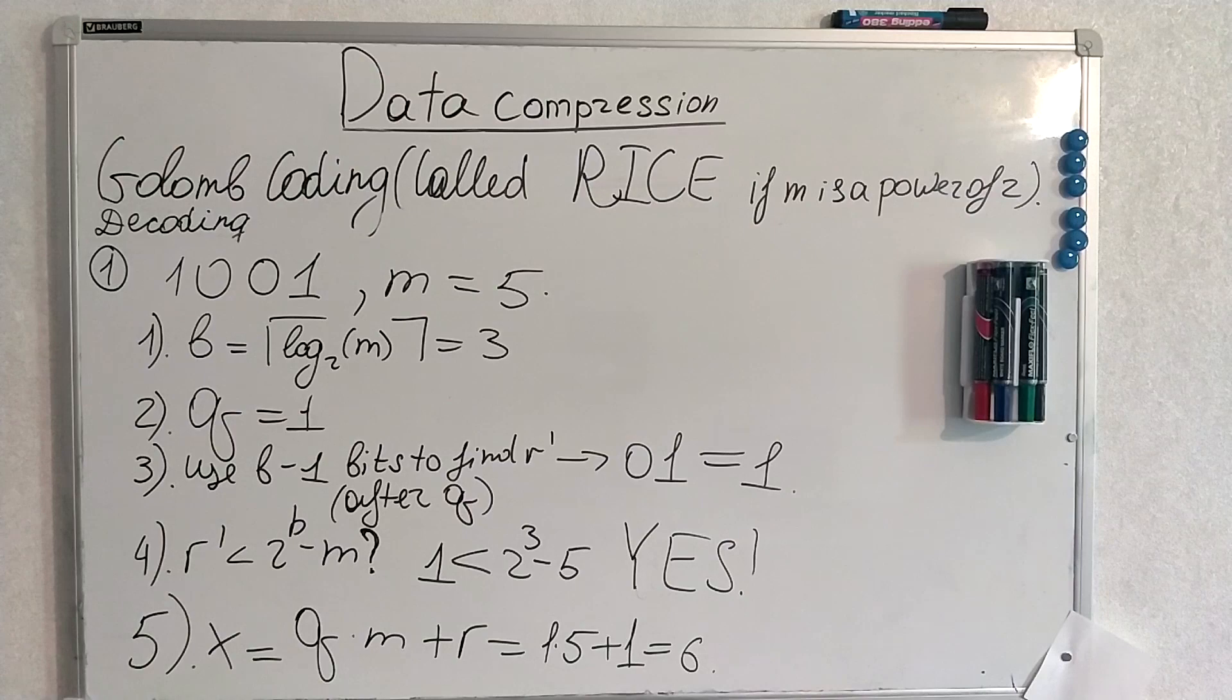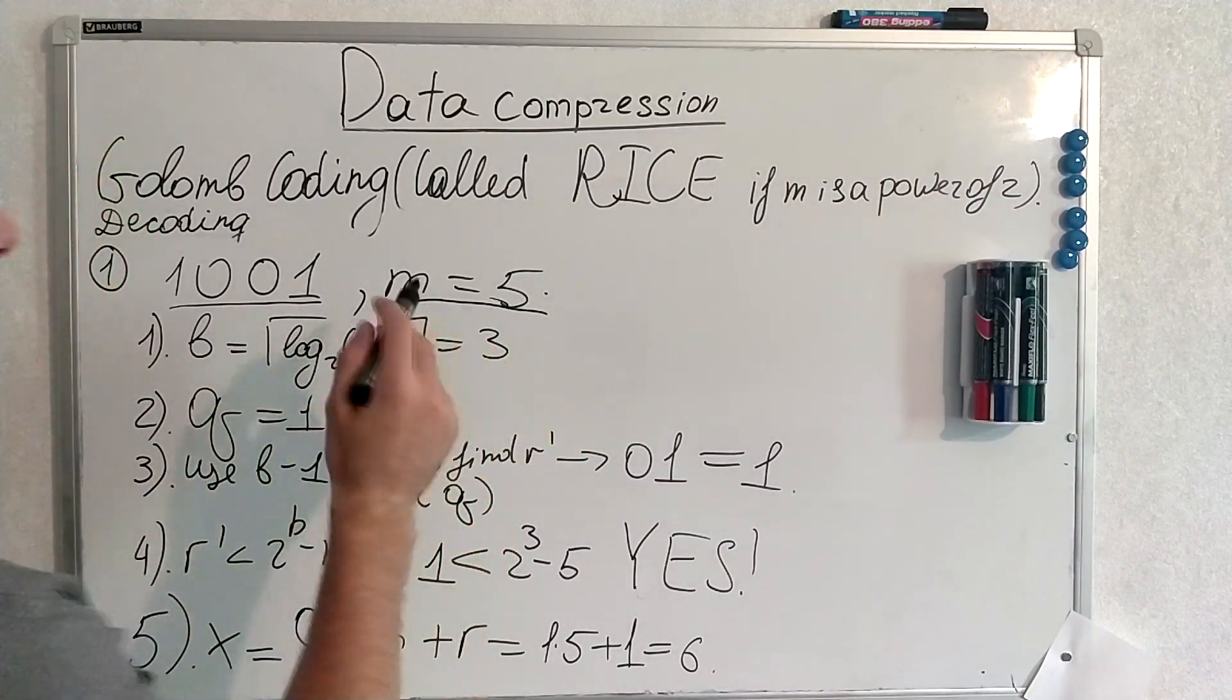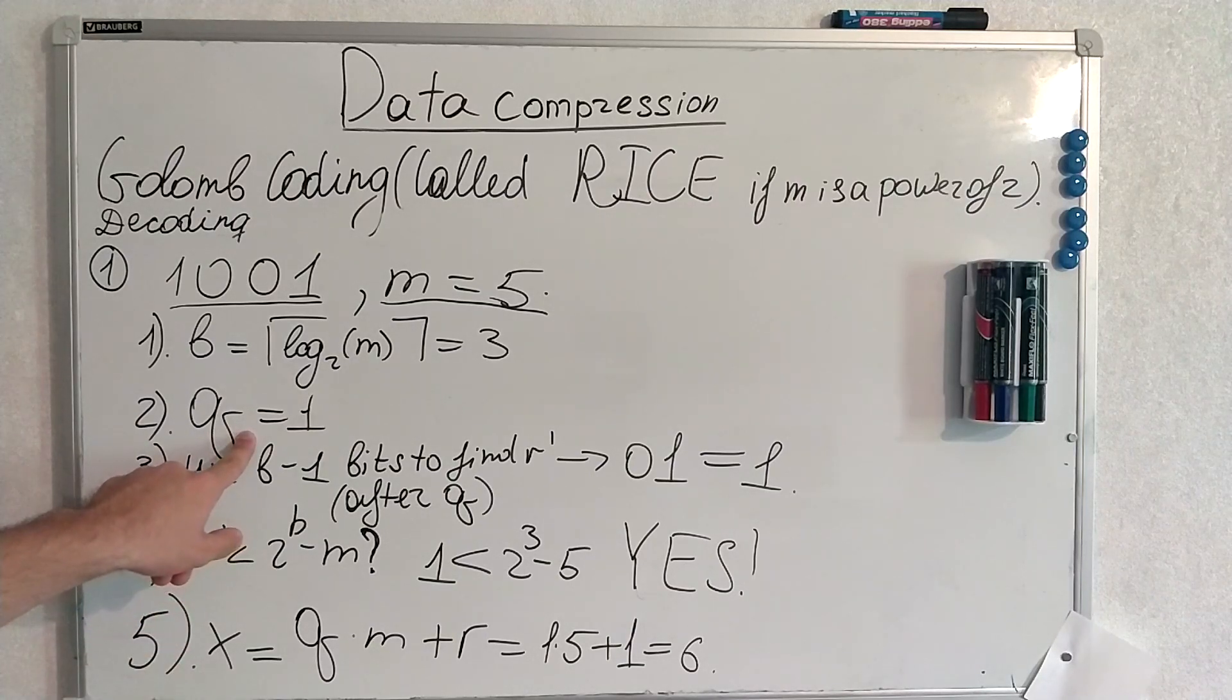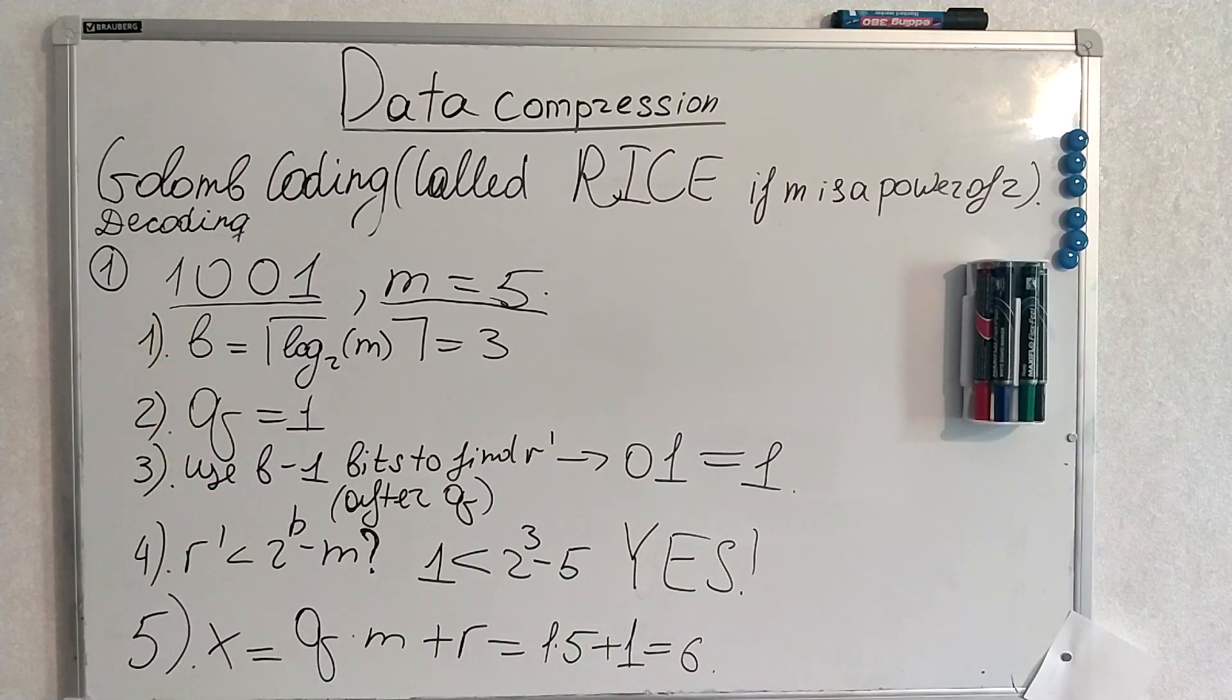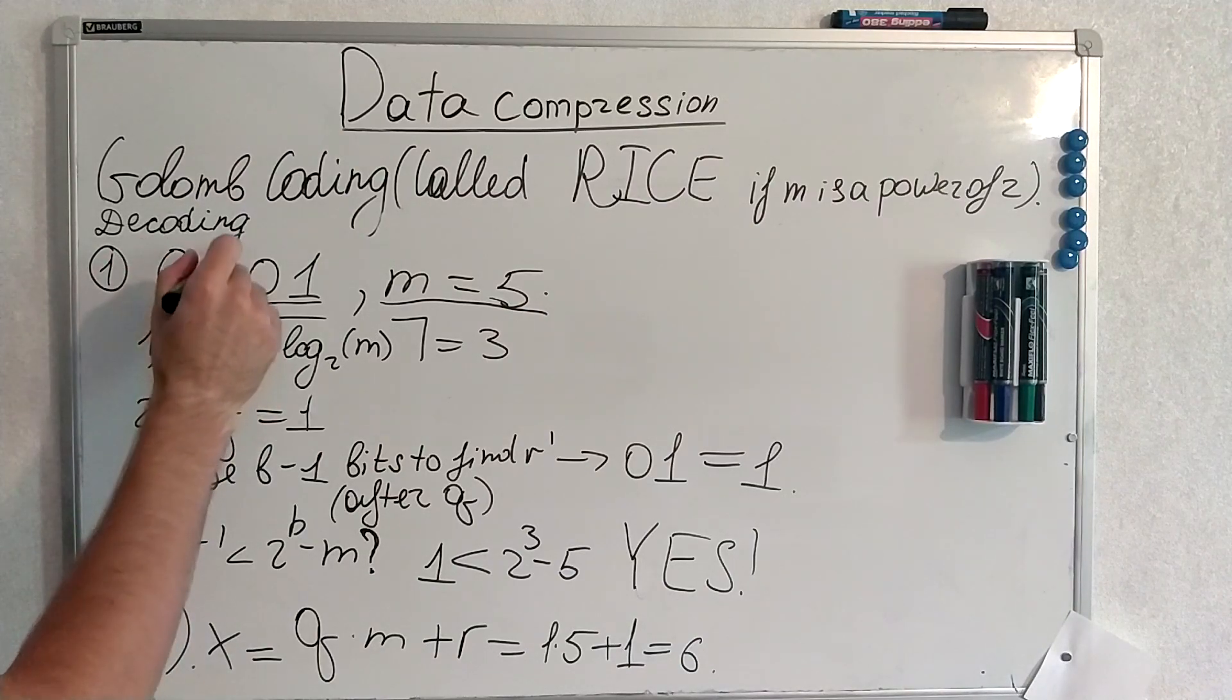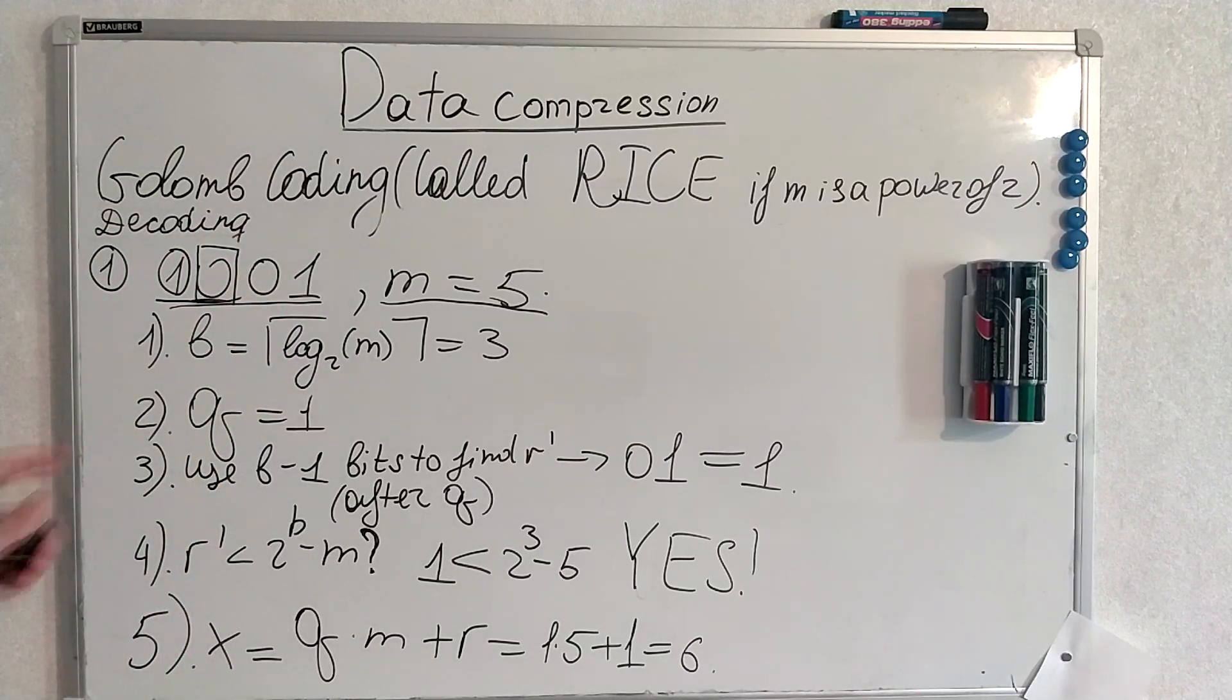And now an example. We are given with this code and this m. If we don't have m this becomes completely undecodable. We have to know m. It's always given. So we find b once again by the formula we already know. We look to find q. q is 1 from here. We have here 1 and then a terminating 0. That means q is 1, because q is encoded in unary system.